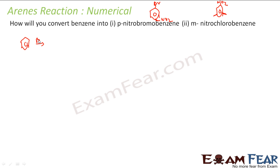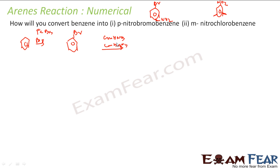The logic here is to decide which group to add first. I add bromine easily using Br2 with AlBr3 or FeBr3 as the Lewis acid catalyst. Once I have bromobenzene, I perform nitration using concentrated HNO3 and concentrated H2SO4. This reaction mechanism has already been explained, and with this I will get either ortho or para product.